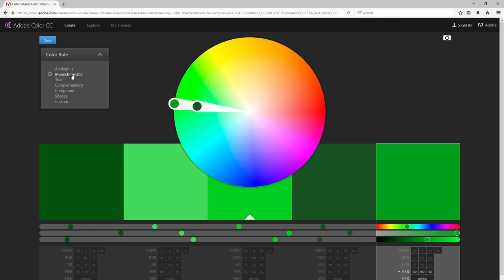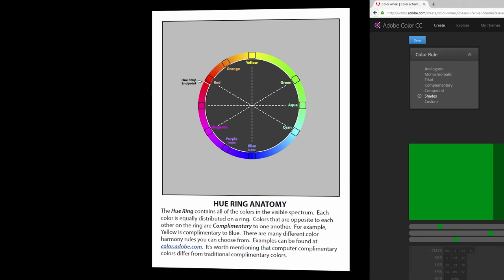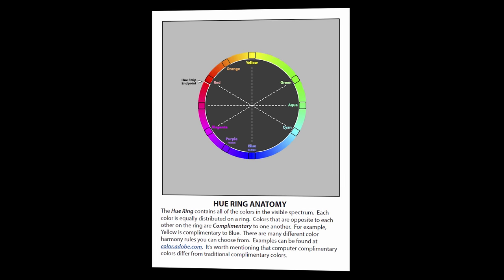There are many different color harmony rules that you can choose from. Examples can be found at color.adobe.com. So you can see on this little diagram the dashed lines are connecting complementary colors. So blue is complementary to yellow, red is complementary to cyan, and magenta is complementary to green, and so on.